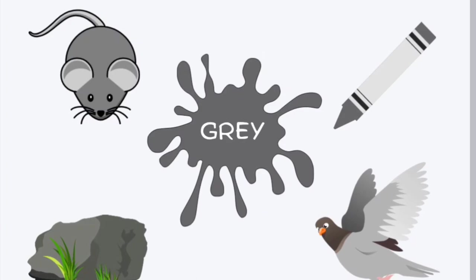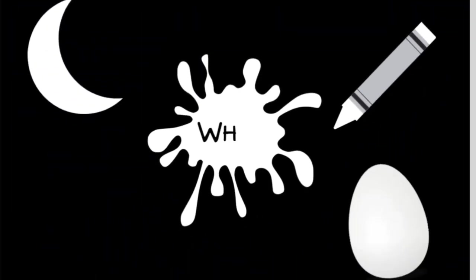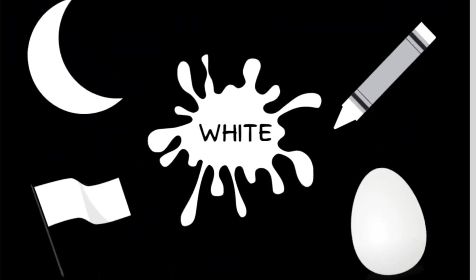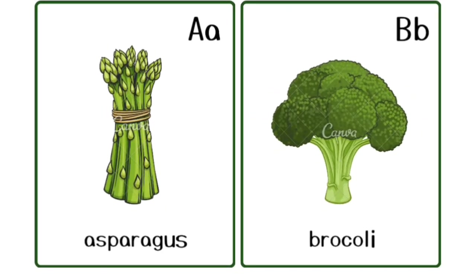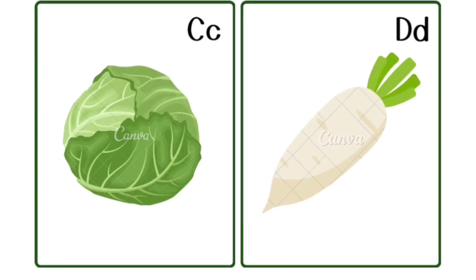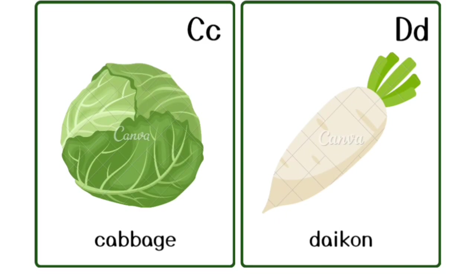I is for igloo, i-i-igloo. J is for jump, j-j-jump. K is for kangaroo, k-k-kangaroo. L is for lion, l-l-lion.